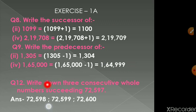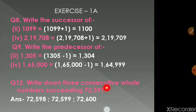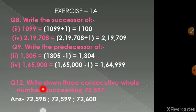Question number 12: write down three consecutive whole numbers succeeding 72597. Consecutive means one after another, so we add 1 each time. 72597 plus 1 is 72598, plus 1 more is 72599, and one more gives 72600.